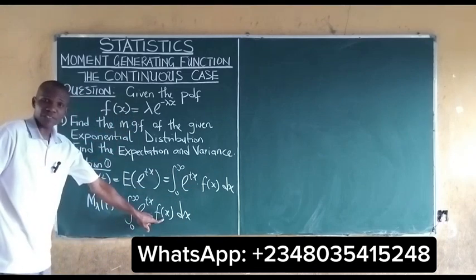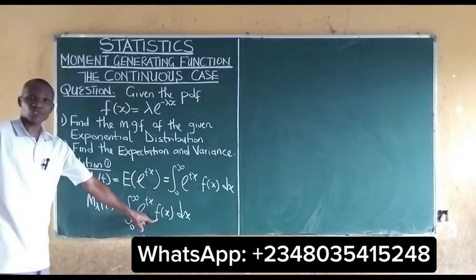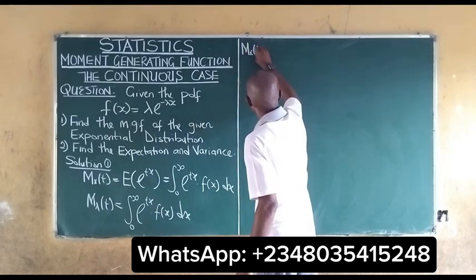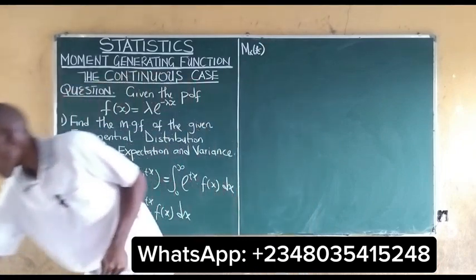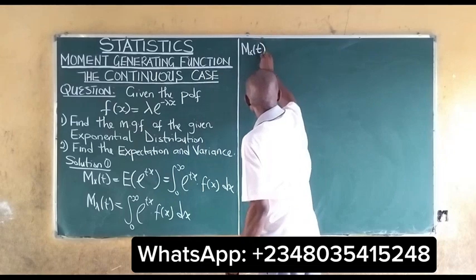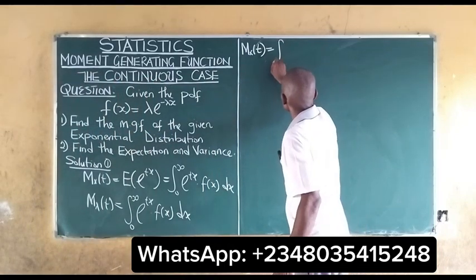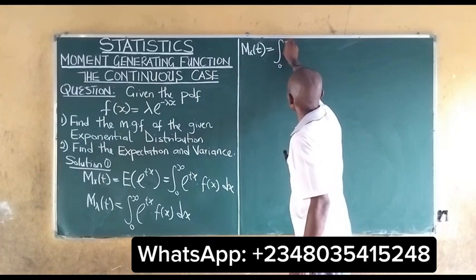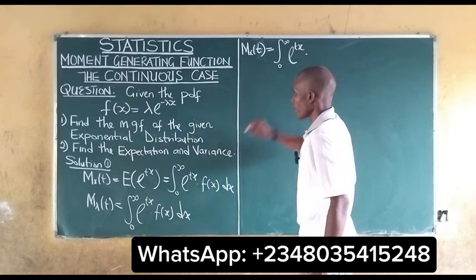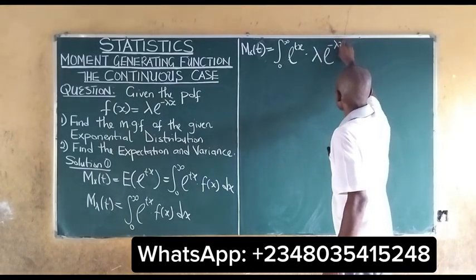The given PDF is as stated. The next thing to do is to substitute the PDF into the moment generating function. That means our moment generating function is equal to the integral from zero to infinity of e^(tx) · f(x) dx, where f(x) is the exponential PDF.